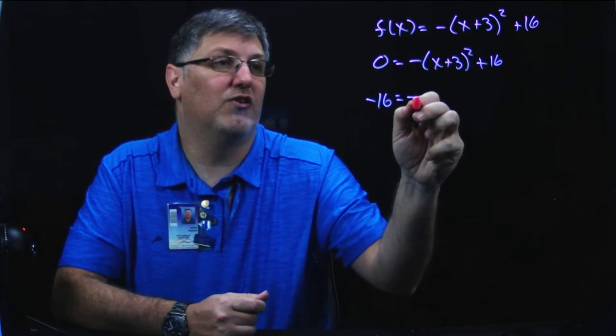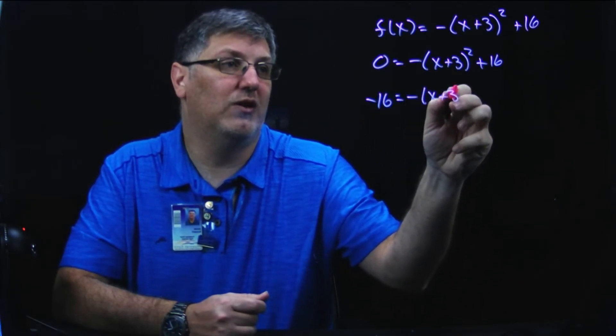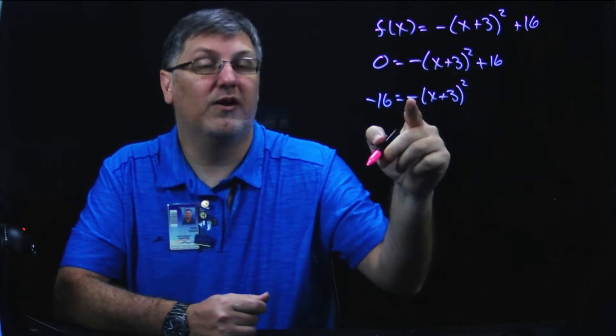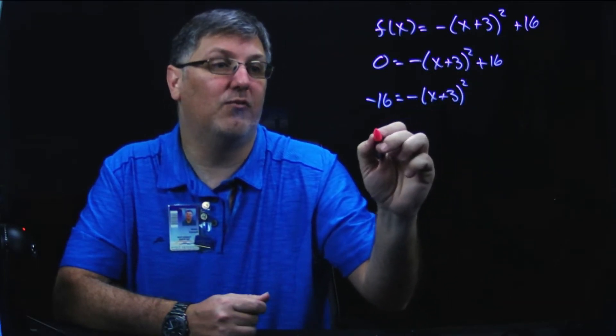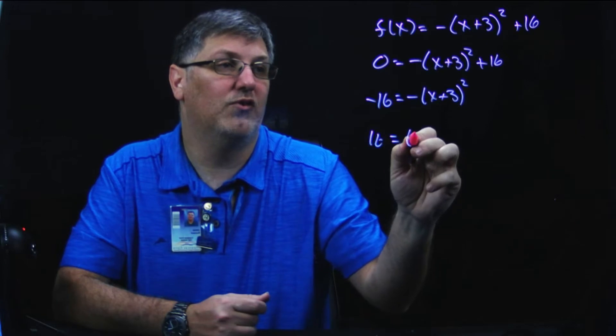So I have negative 16 equals negative x plus 3 quantity squared. I'm going to get rid of this negative sign by dividing by negative 1. So now I have 16 equals x plus 3 squared.